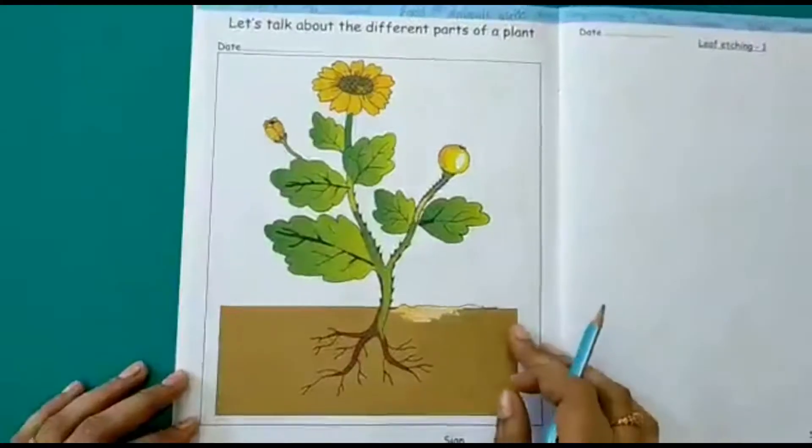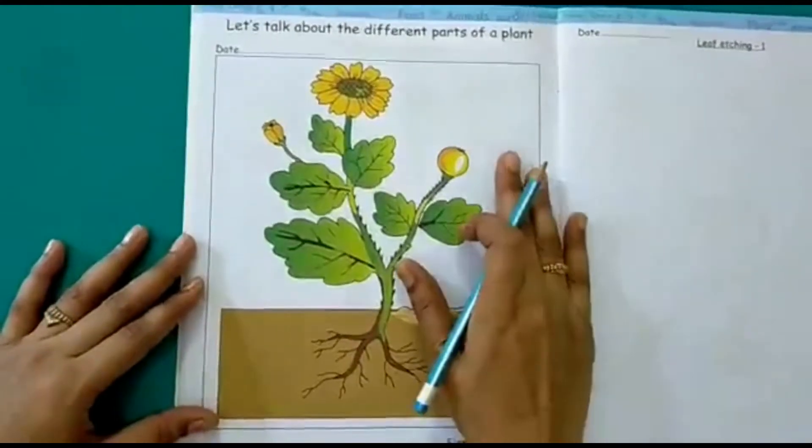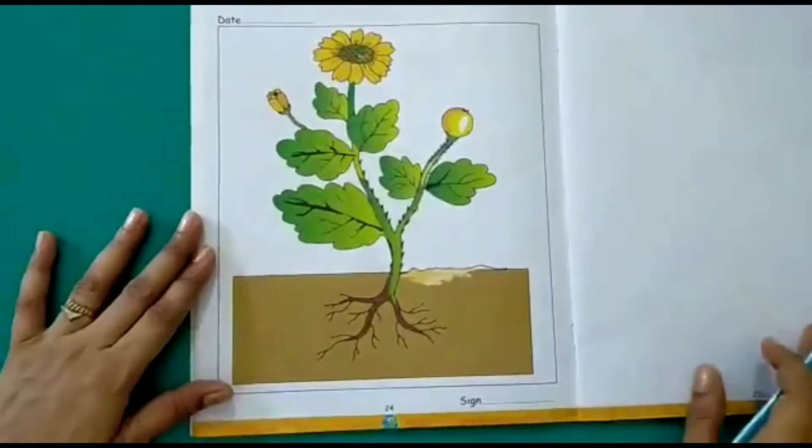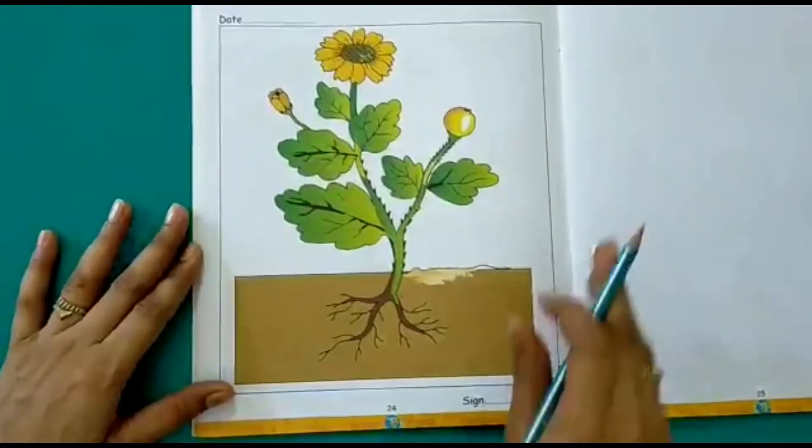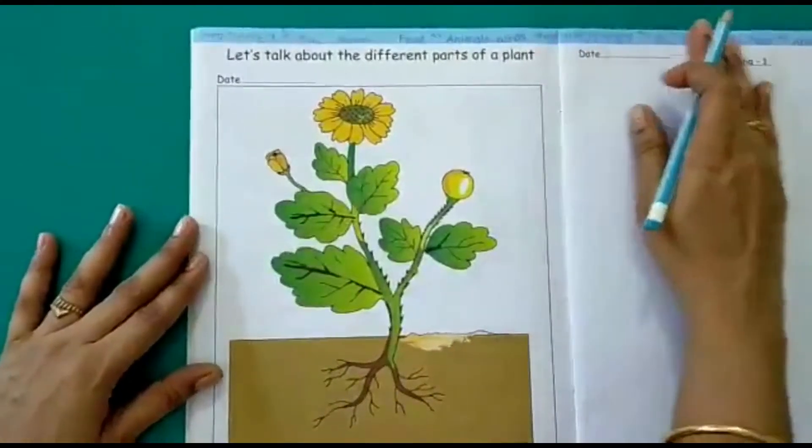Good morning children. Let's start with our EVS worksheets for today. So children, today in our EVS workbook we are on page number 24. And what activities do we have here?